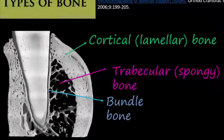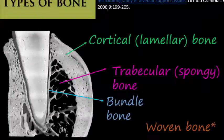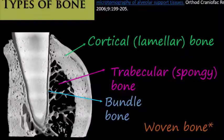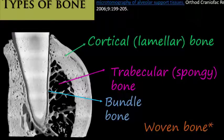There is also another important bone type which does not appear in this image and will only be described in further classes. It is the woven bone, which usually is formed after the bone is subjected to trauma or intense mechanical stimulation.